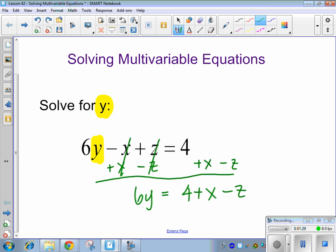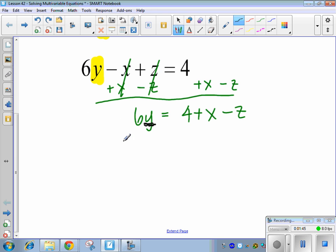It is not done, because I want y all by itself. I just want this piece right here. I don't want to know what 6y equals. I want to know what y equals. So what do I have to do to both sides now to get y? Divide by 6. So I need to divide both sides by 6.